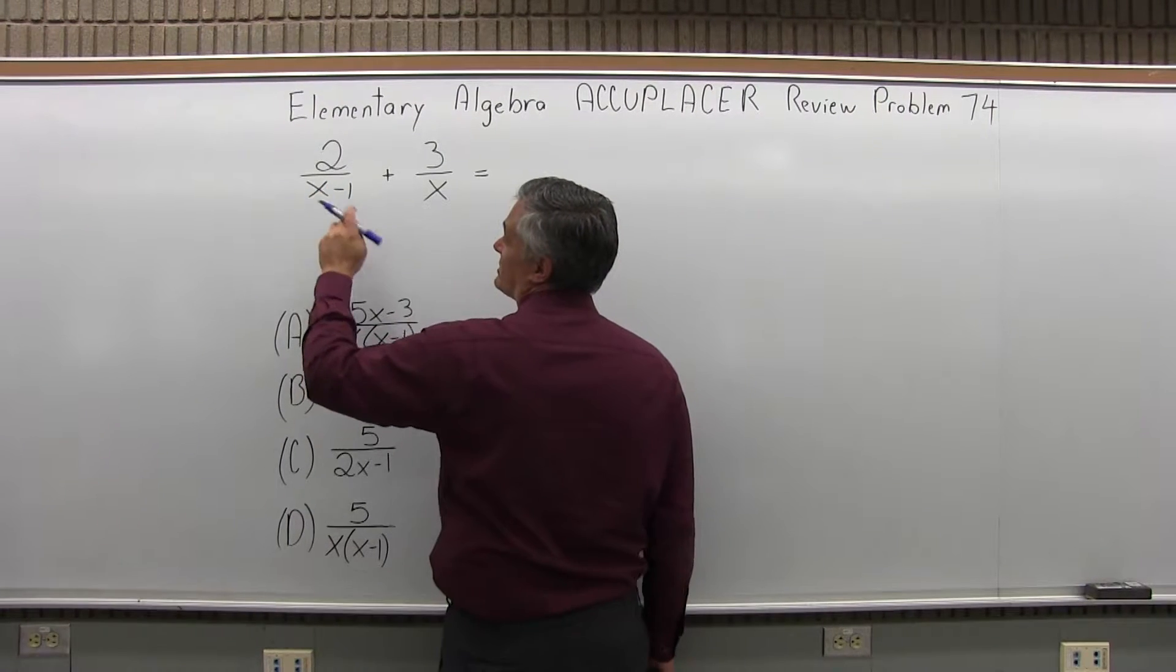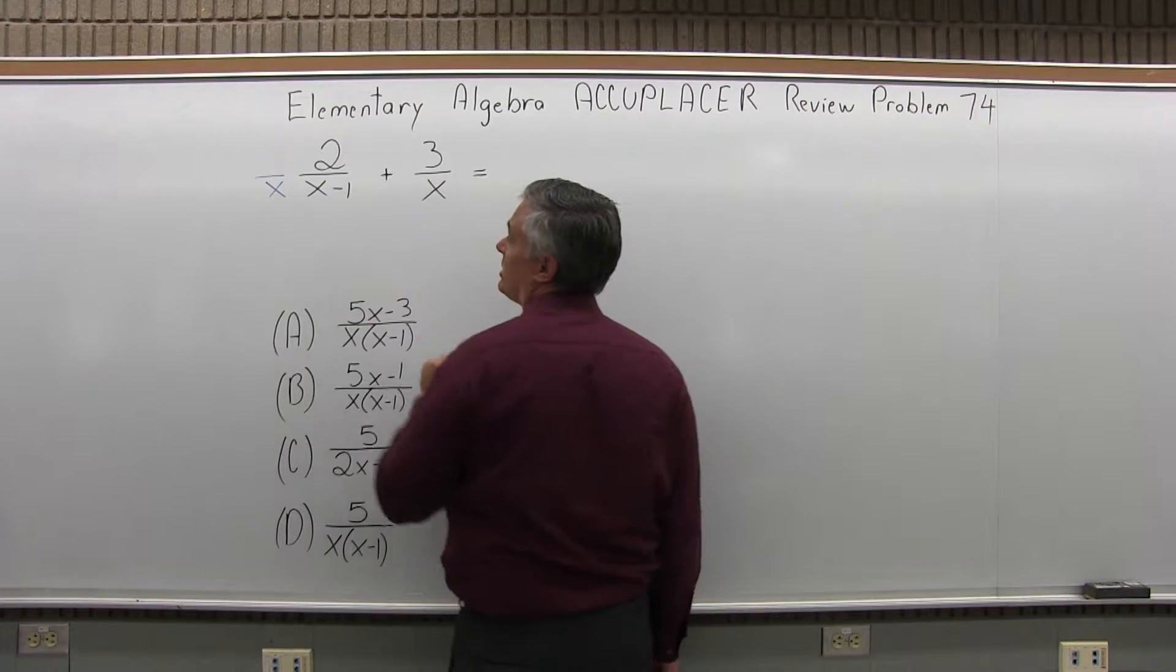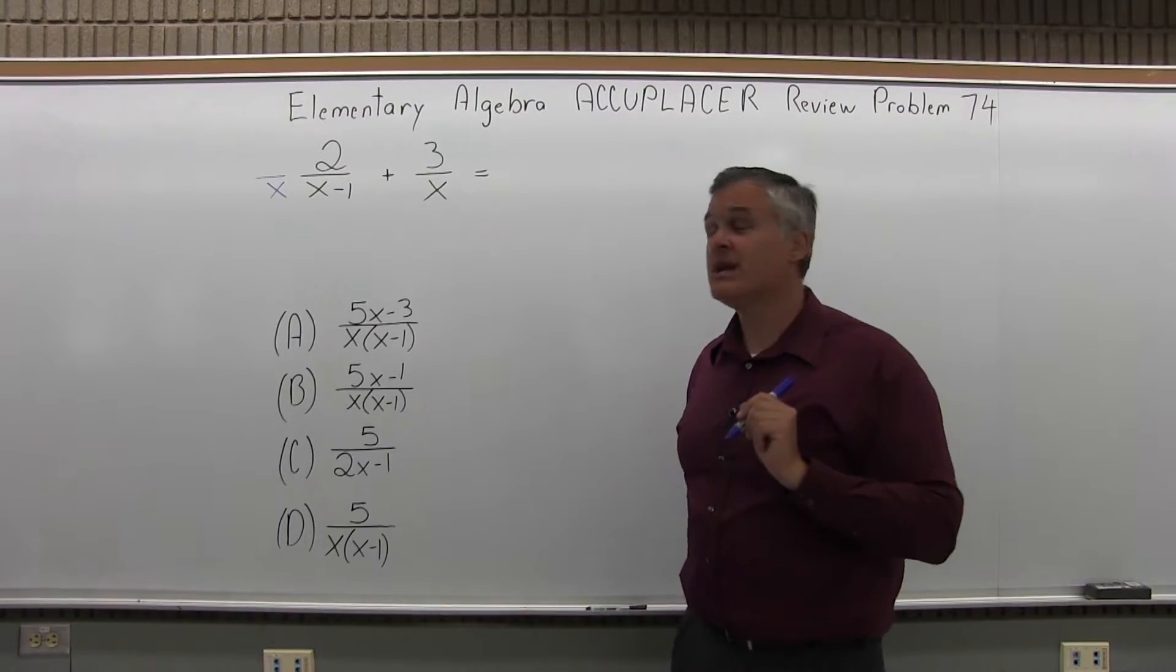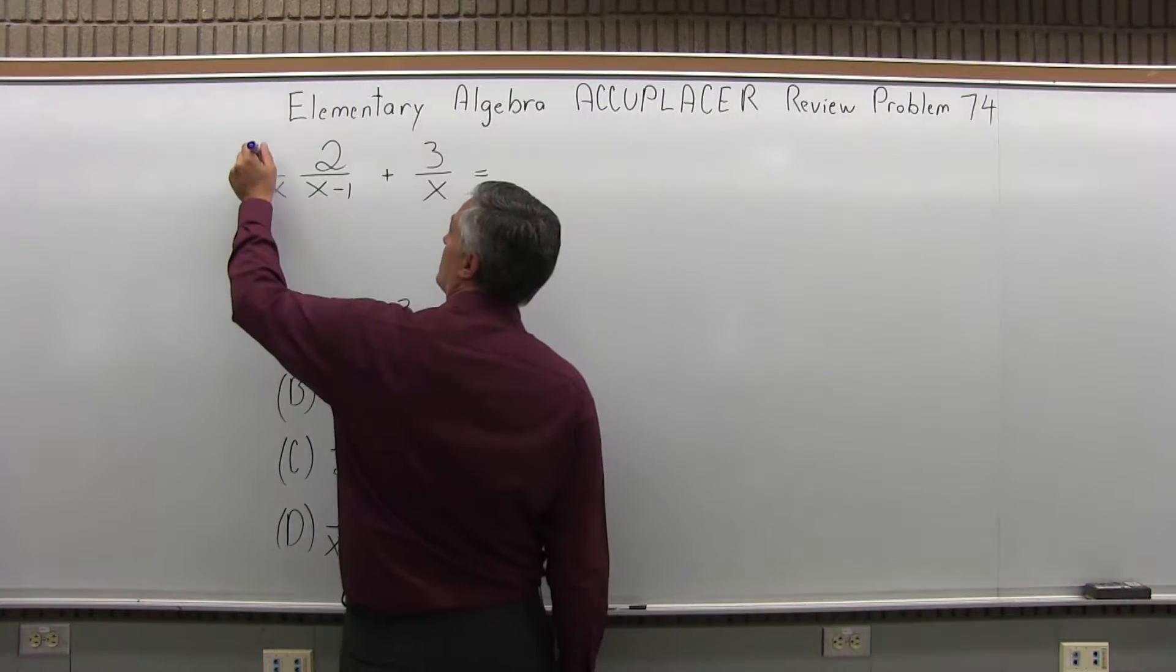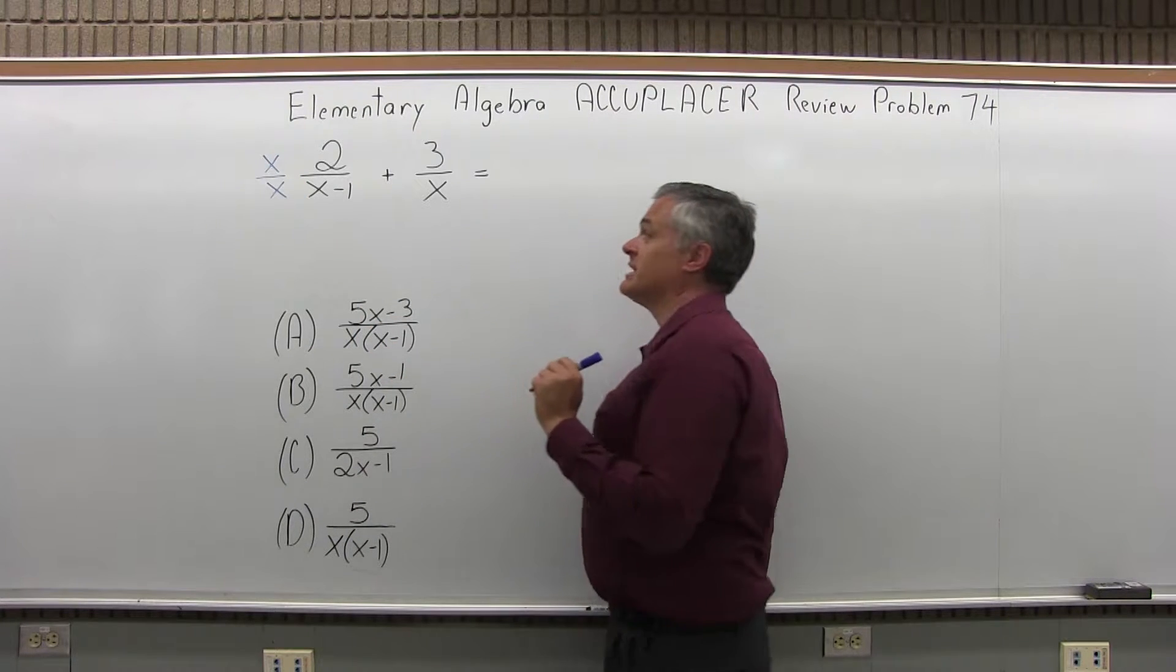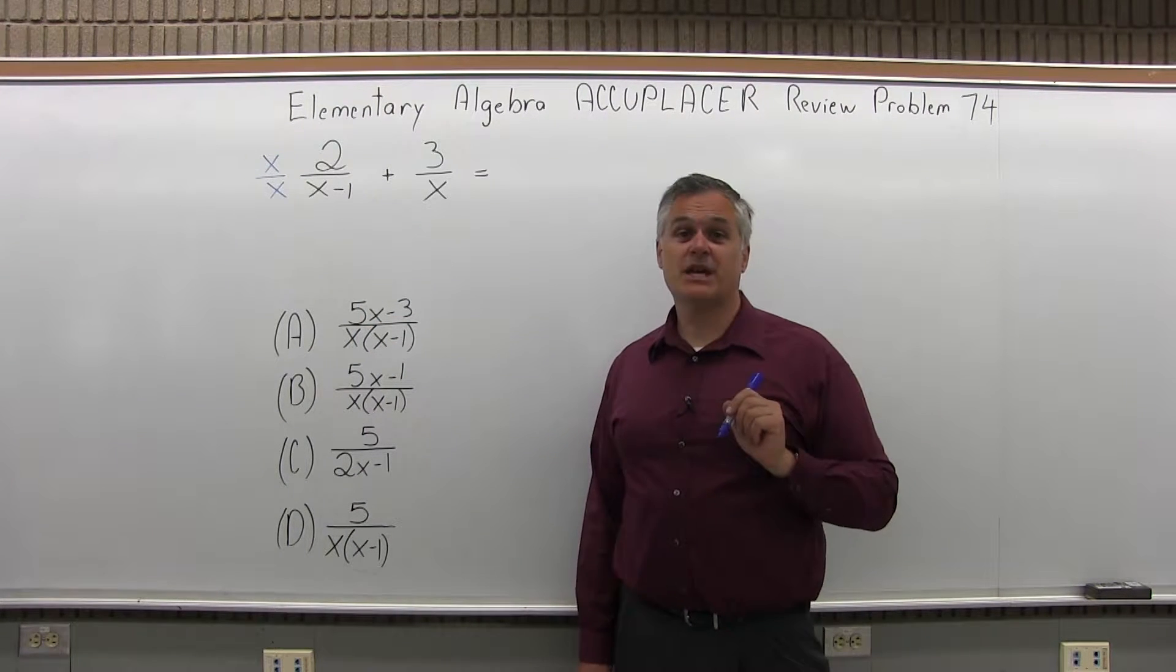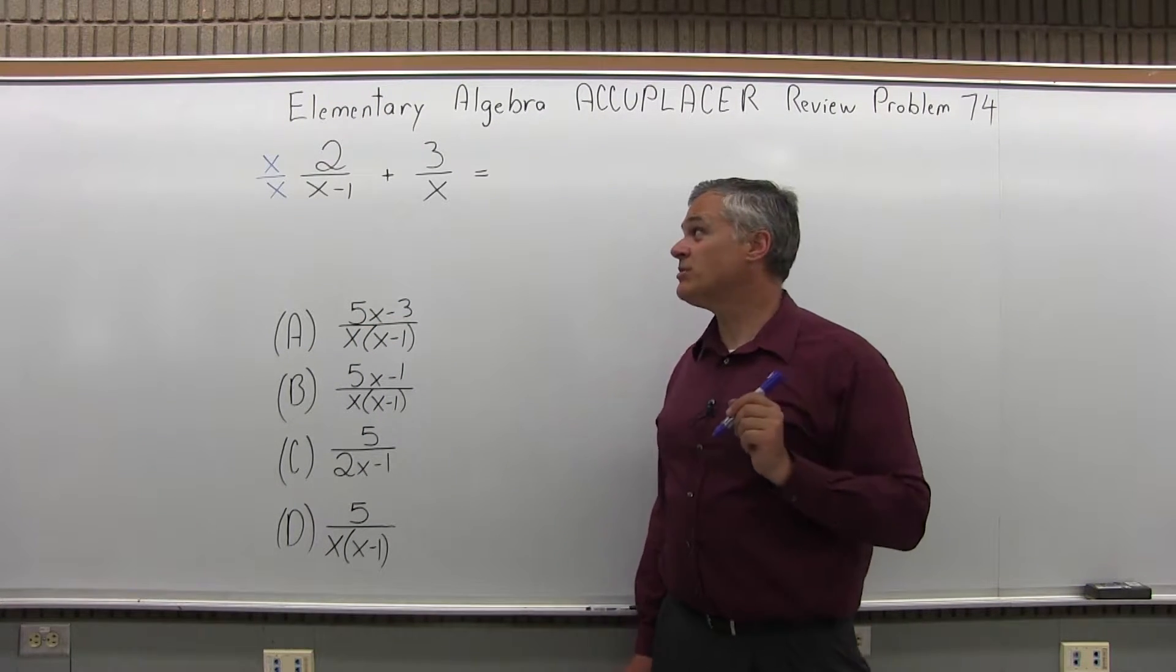So both fractions will have to be modified. The first fraction, I want to multiply the denominator times x, and I can do that if I also multiply the numerator times x. So I'm multiplying times x over x, which is just multiplying times 1.